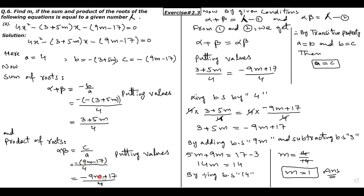Ab wahi condition use karenge: sum of roots aur product of roots dono barabar the ek given number lambda ke. From equations 1 and 2, transitive property use karenge: alpha plus beta aur alpha beta aapas mein barabar ho jayenge. Values put karne ke baad, dono ka denominator same hai — 4. Denominator khatam karne ke liye dono sides ko 4 se multiply kiya, toh 4 cancel ho gaya from both sides.